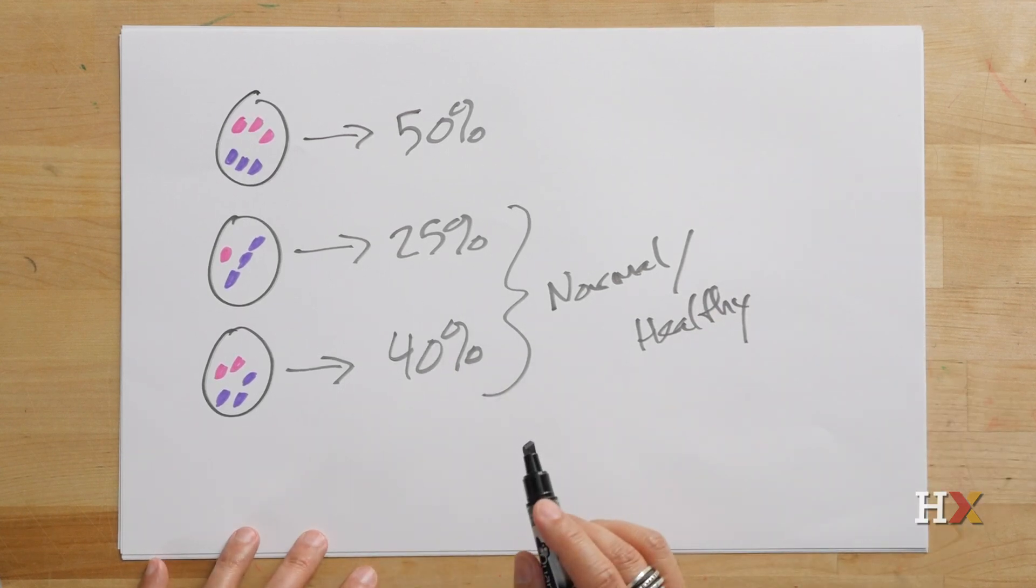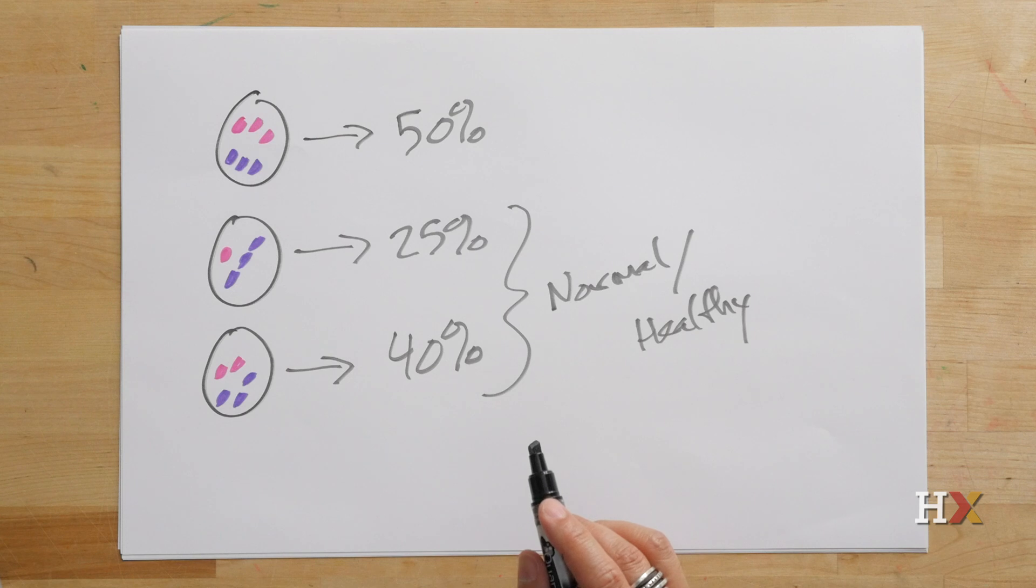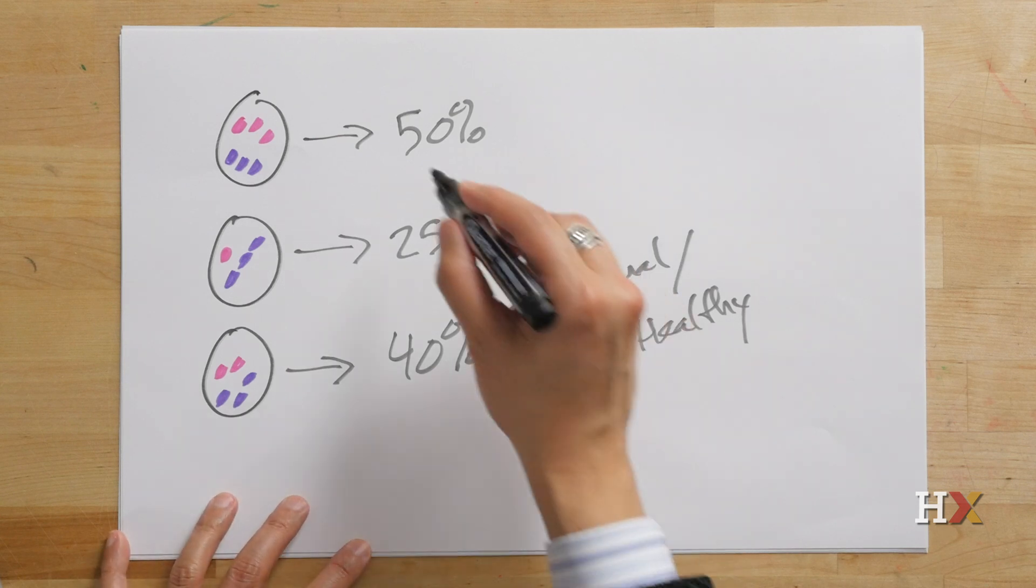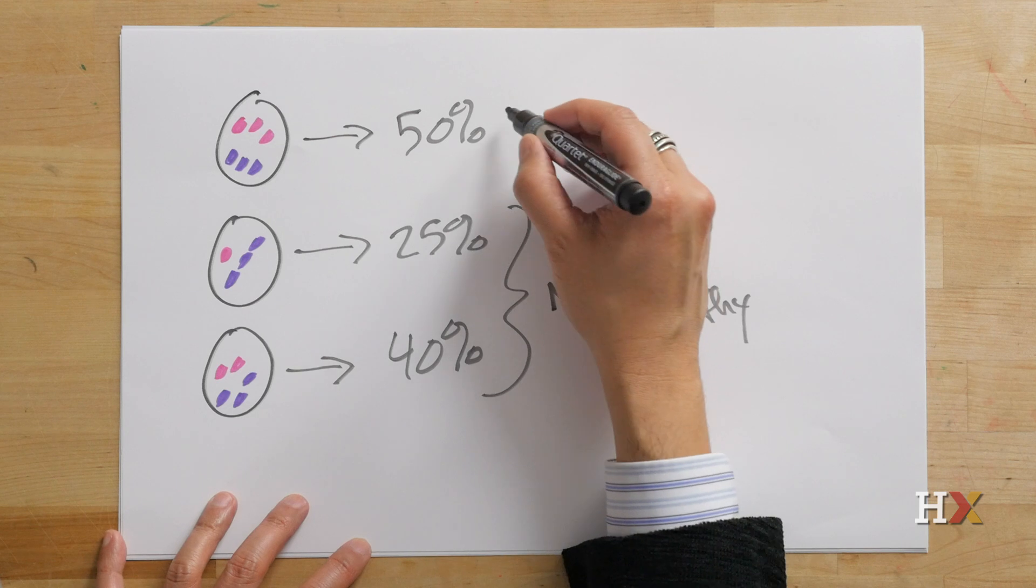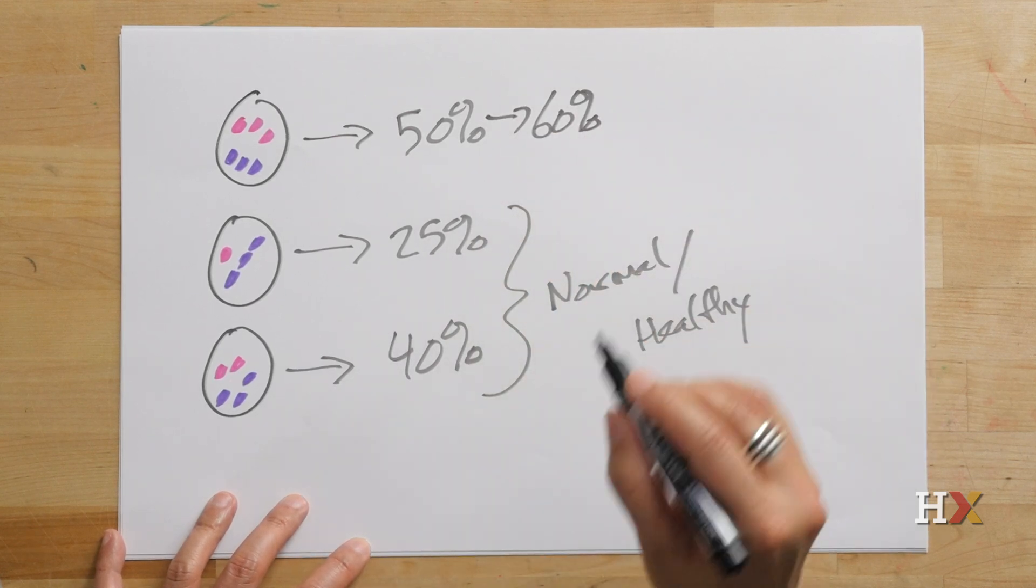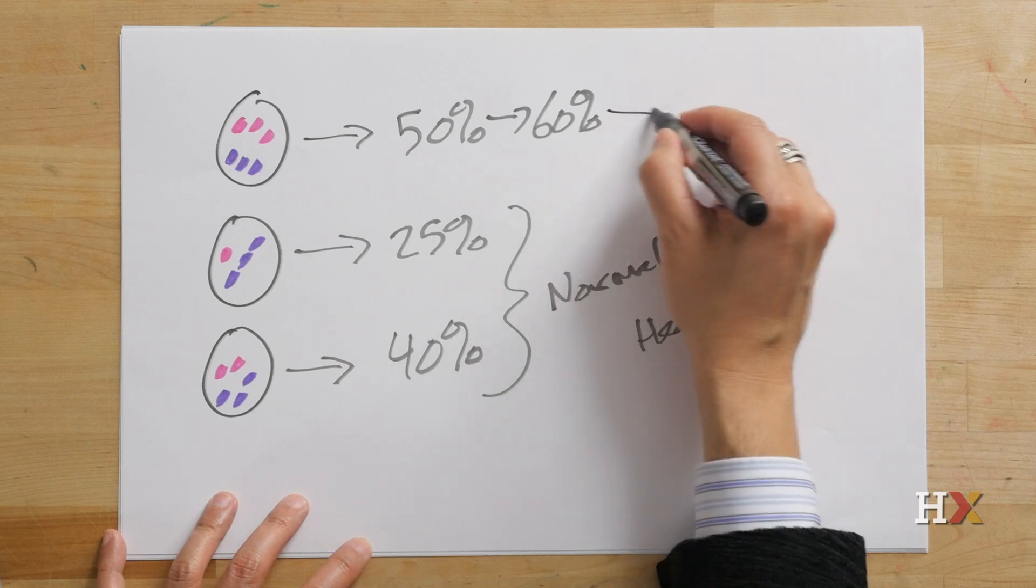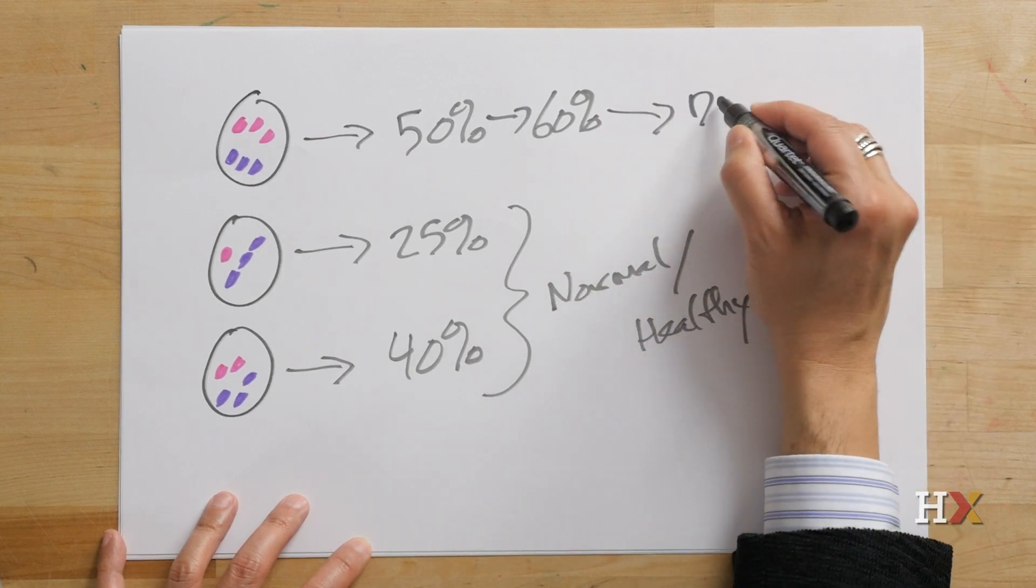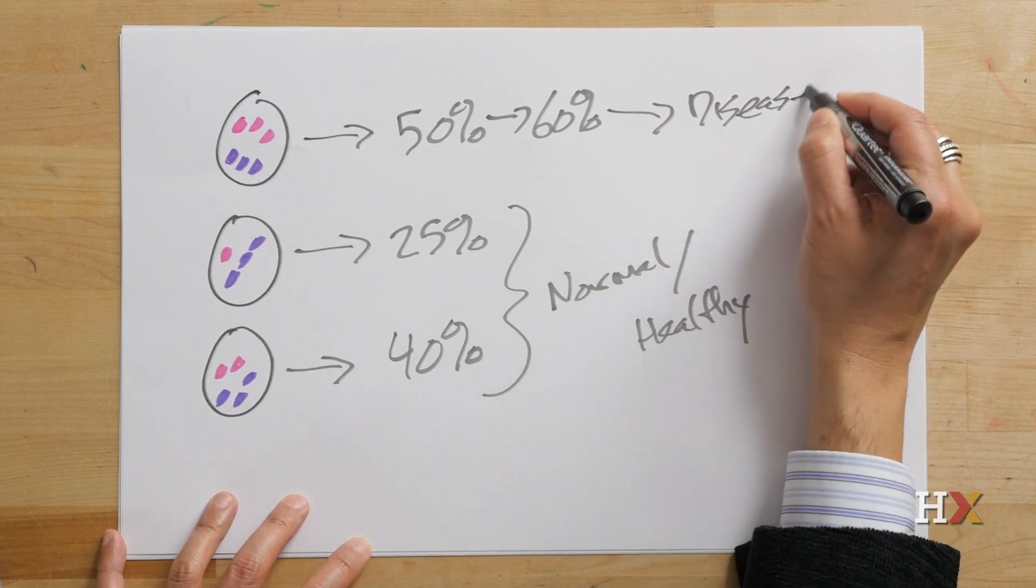In this case, what we might have is a situation where 50%, or in fact, what's often the case, 50% to 60% of mitochondria having the defect can often result in a disease presentation.